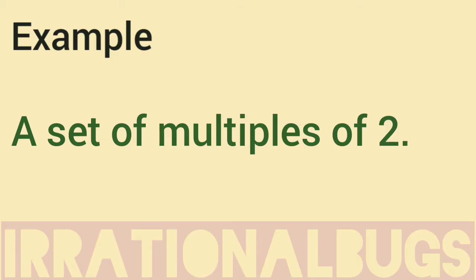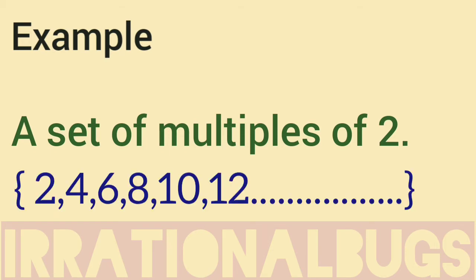For example, a set of multiples of 2. Multiples of 2 are 2, 4, 6, 8, 10, 12. We cannot tell how many. This has lower limit 2, but upper limit is not there. So this is an infinite set.